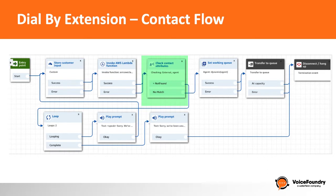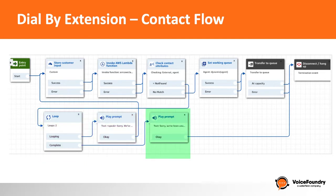If the agent extension username wasn't in the database then the Lambda function will return "not found" and we're checking for that in our check contact attributes action block. If it's not found we'll go back and do a loop — we'll tell the caller that we were unable to find the extension number and to try again. On the third attempt we'll complete the loop and say sorry we're unable to find the extension you require. If we receive a username we will then set a working queue, transfer the caller to that queue, and the agent's phone will ring.